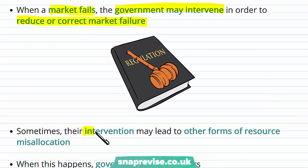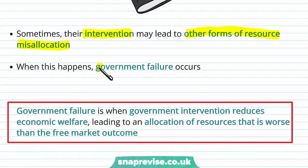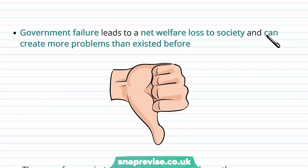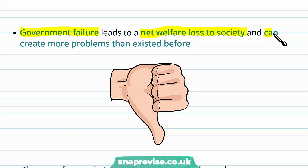Sometimes that intervention may lead to other forms of resource misallocation — we're assuming that the government may not do the right thing. And when this happens, government failure occurs. Government failure is defined as when the government intervention reduces economic welfare, leading to an allocation of resources that is worse than the free market outcome. Similar to our market failure analysis where we saw a deadweight loss, government failure is going to lead to a net welfare loss to society and can create more problems than existed before.